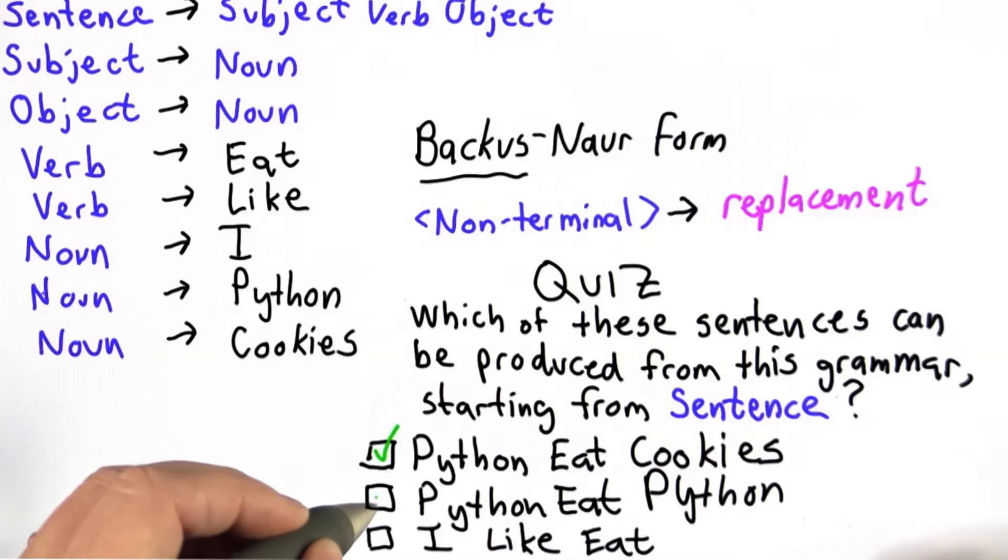The answer is the first two can be produced, the third one cannot. And the way to see that is to follow the rules.